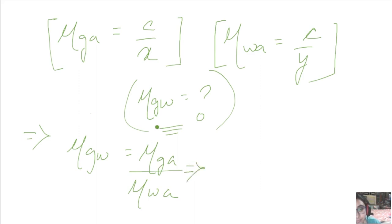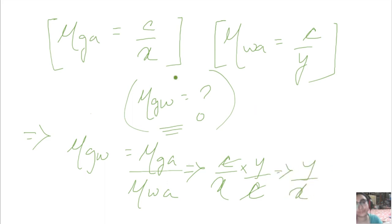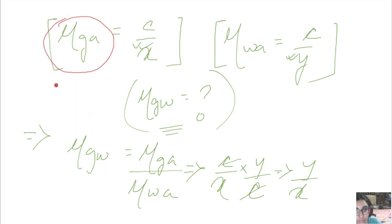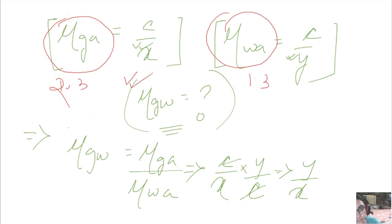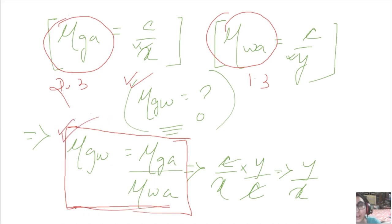So if you are given that refractive index of glass with respect to air is 2.3 and refractive index of water with respect to air is 1.3, you can find the refractive index of glass with respect to water using μ_GW = μ_GA / μ_WA. You can pause the video and note down this formula. Our discussion on refractive index is done here.